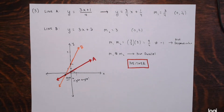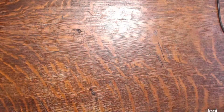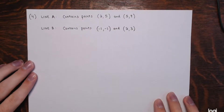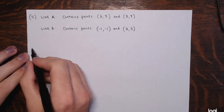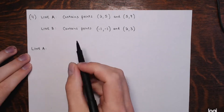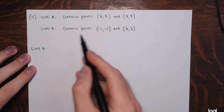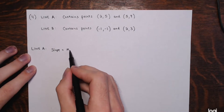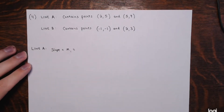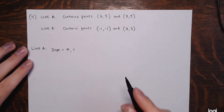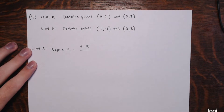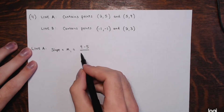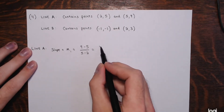One more problem. This time we're not given equations — we're given points on each line, and we'll need to write the equations. Line A contains the points (2, 5) and (5, 9). Let's find the slope m1. It's the change in y over change in x: (9 minus 5) divided by (5 minus 2) — 2nd minus 1st for both. That's 4 over 3, so this line has a slope of 4/3.